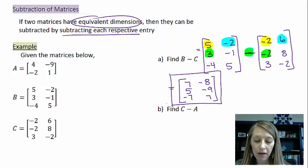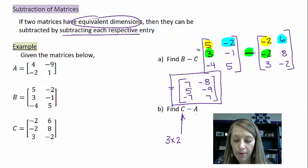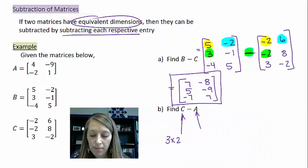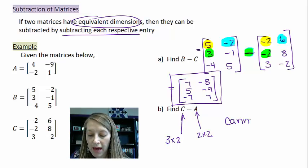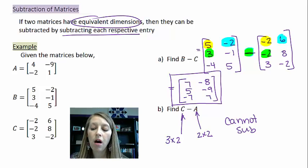For part B, I won't write it out — the C matrix is three by two and the A matrix is two by two, just like before. I note that I cannot subtract these, because the dimensions of the two matrices are not the same.